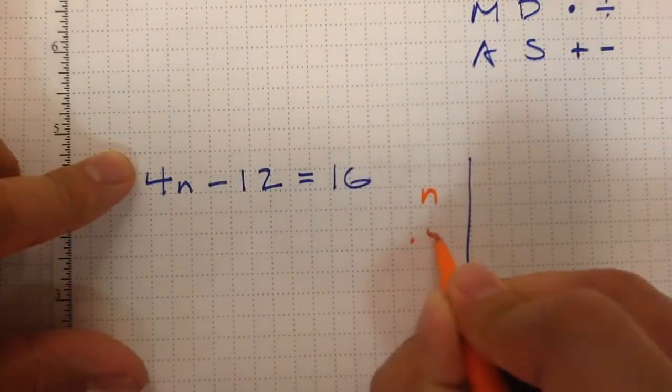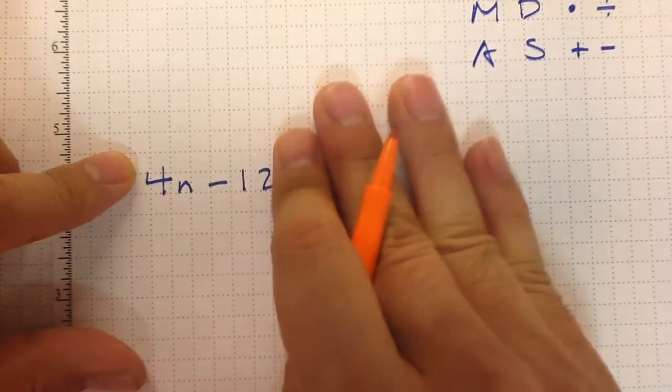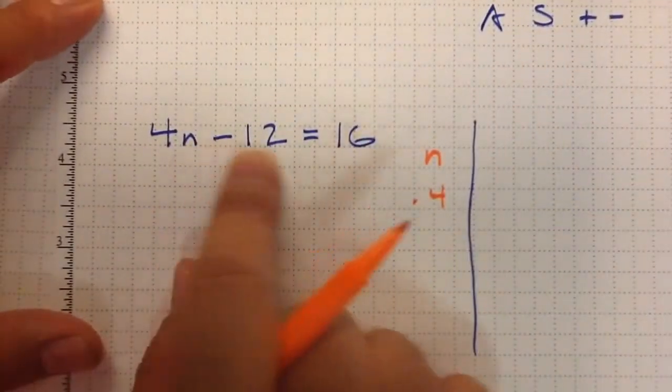So I'm just listing out the order of operations. Now I've got 4n, and it looks like the next thing they did was the last step in order of operations, which was to add and subtract. In this case, subtract 12.